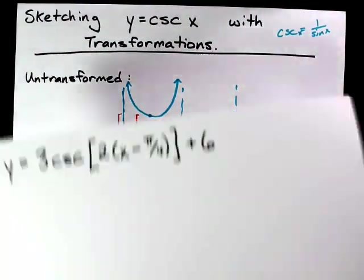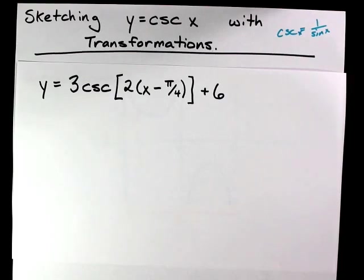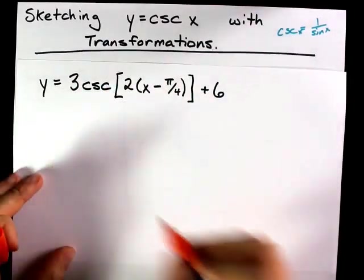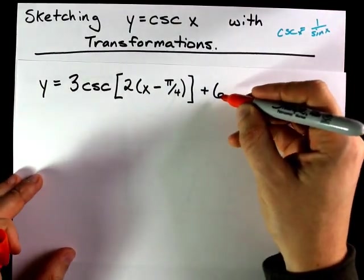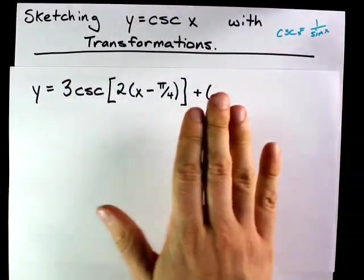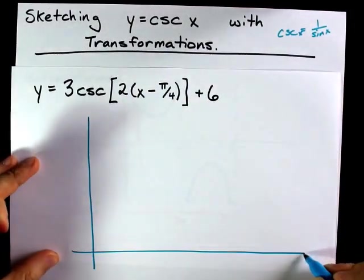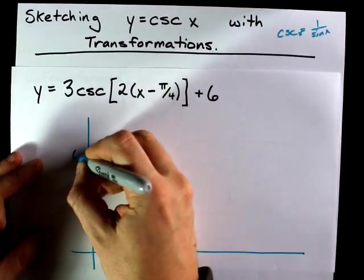Now, let's sketch this one, this transformed cosecant function. It has a vertical stretch of 3 and a vertical shift of up 6. That gives us information we can use immediately. Here is going to be my grid. Our vertical middle is going to be here at 6.